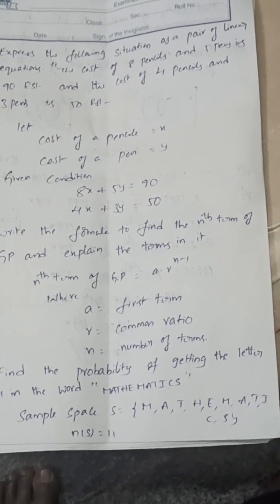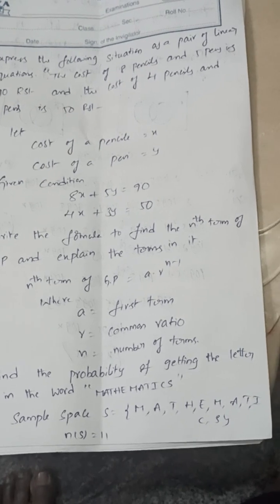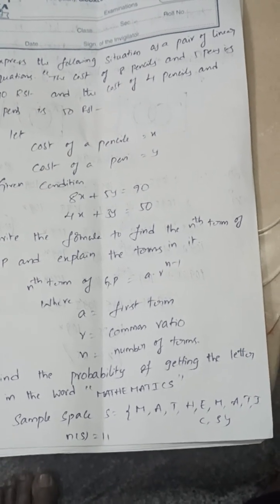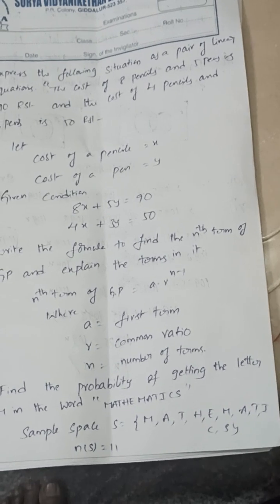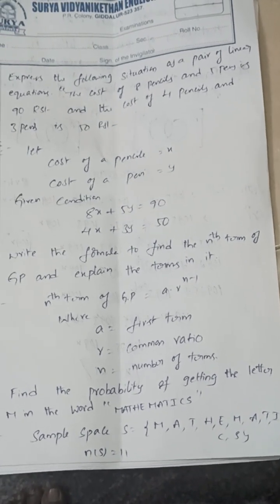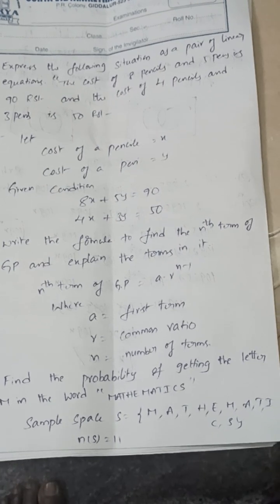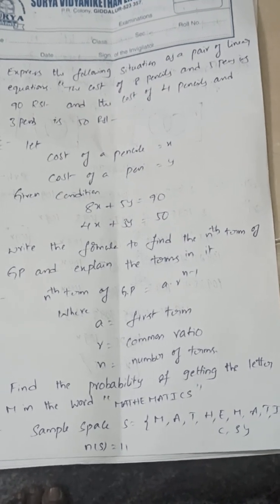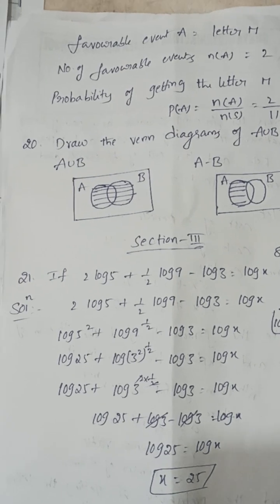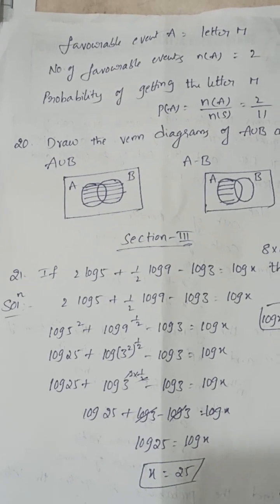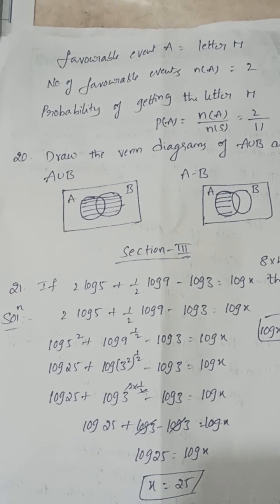Find the probability of getting the letter M in the word MATHEMATICS. The letters are M, A, T, H, E, M, A, T, I, C, S — 11 letters total. The number of M letters is 2. So the probability of the letter M in MATHEMATICS is 2/11.